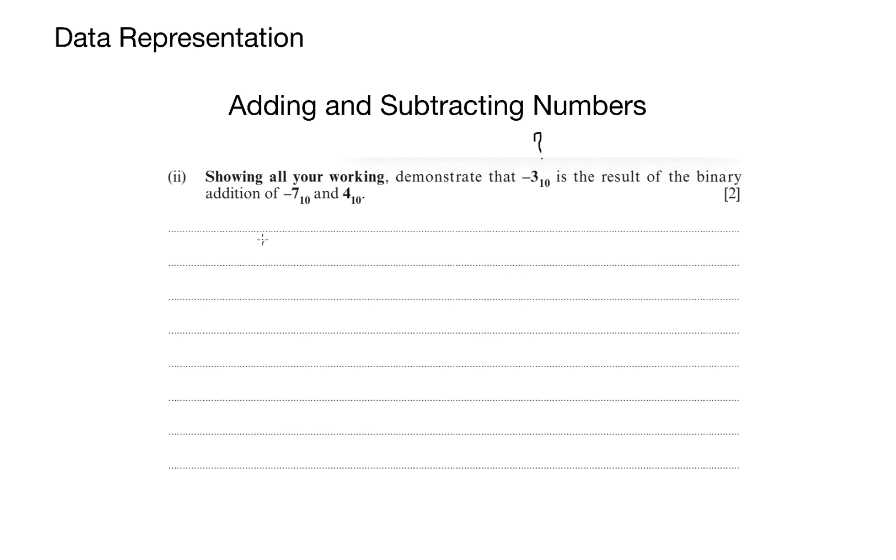In this next question, we start talking about subtraction. Now, computers are very complex adding machines and they're very good at adding. What we do with our subtraction is we actually turn it into an addition. And we do that by turning our negative numbers negative by using two's complement. Forget about sign and magnitude here. We always use two's complement.